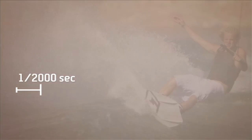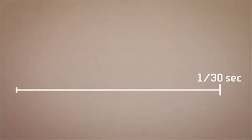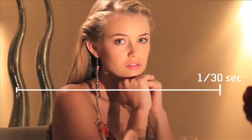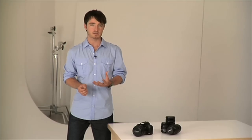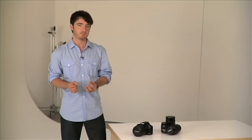Fast shutter speeds, like maybe 1/2000th of a second, are used to generally freeze really fast motion. And slow shutter speeds, like 1/30th of a second, are generally used in really low light situations. The lower the shutter speed, the richer the colours and the more detail you'll have in the image.